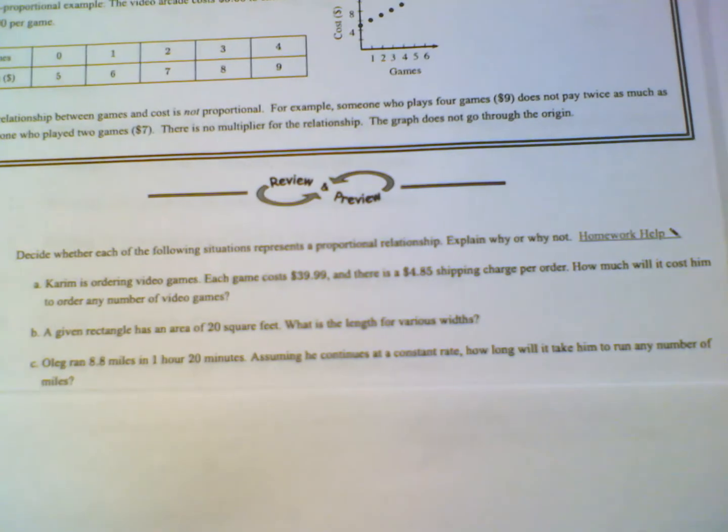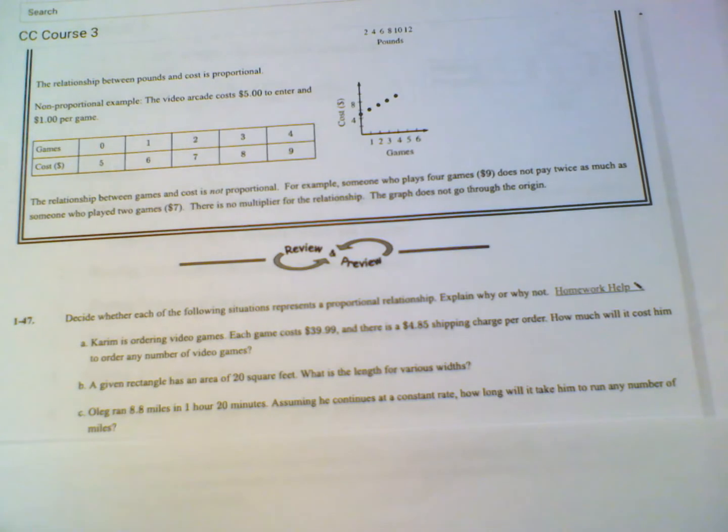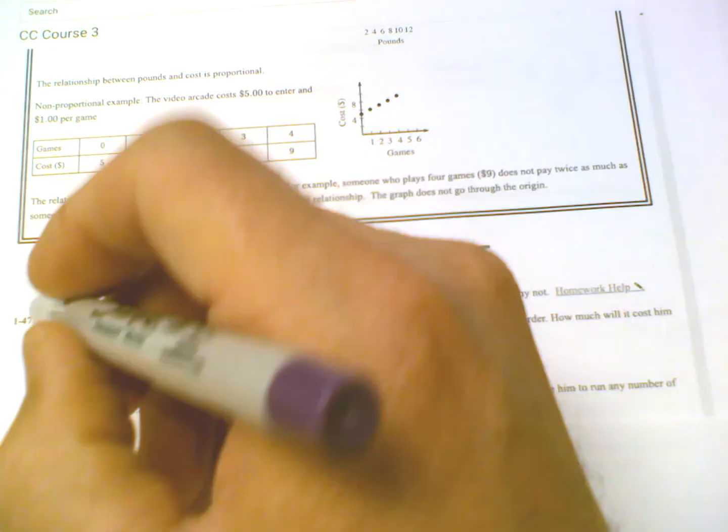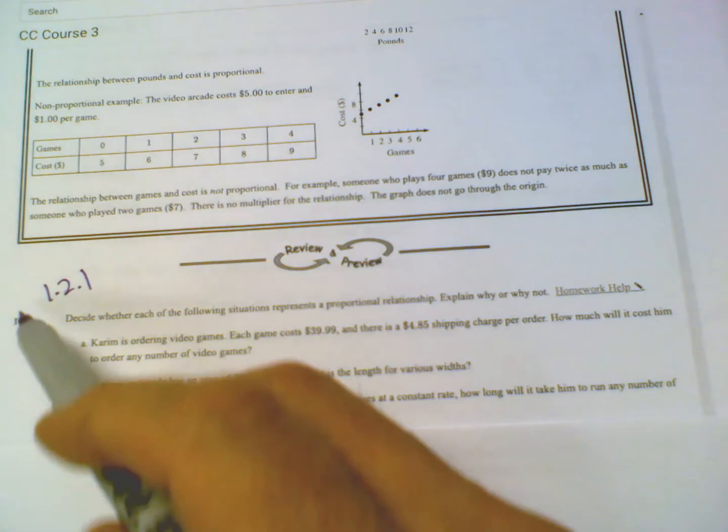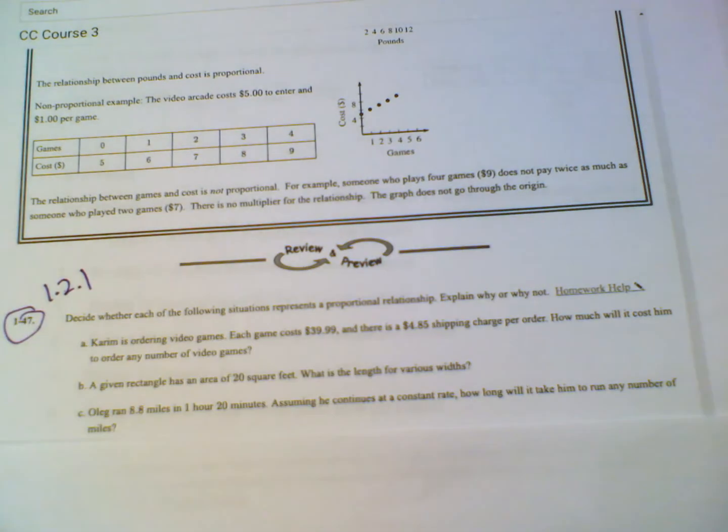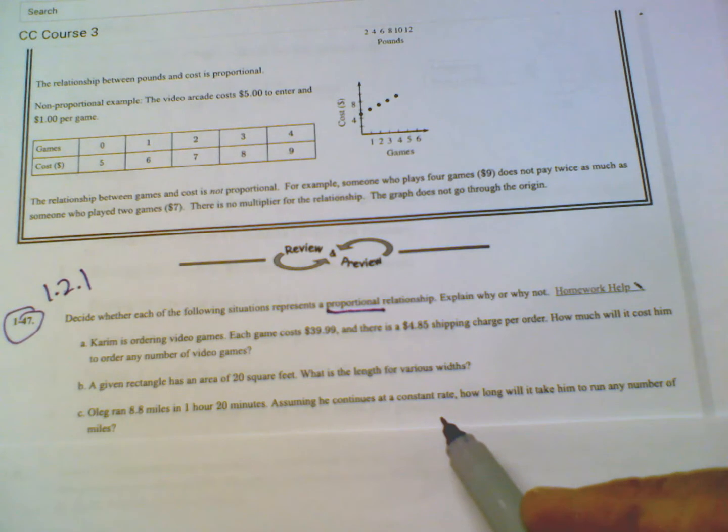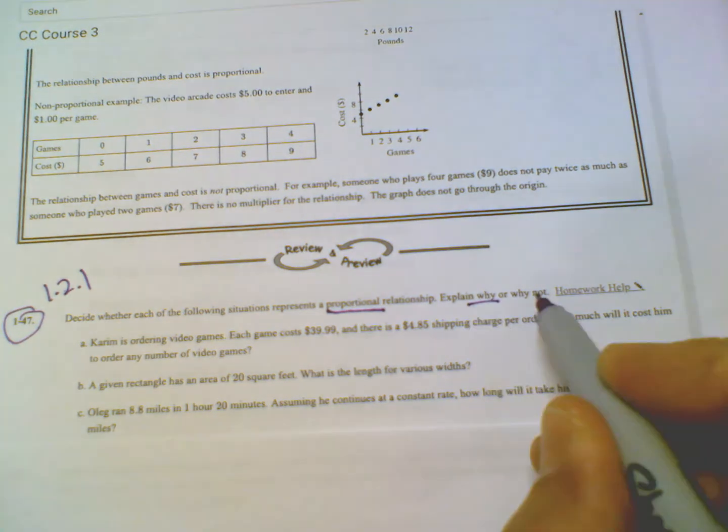Hey folks, I've been asked to give a little bit more detail, dig a little deeper in problem 1-47. So this is from lesson 1.2.1. I'll write that down so you can see it - 1.2.1, and then I'm looking at number 1-47. So I want to make sure we totally understand this idea of what is proportional and what is not, and then kind of be able to explain why or why not something is or is not.